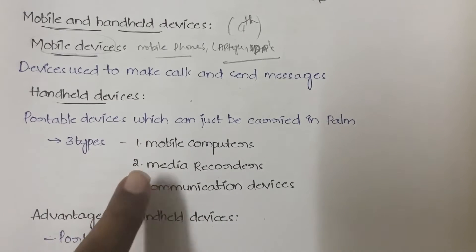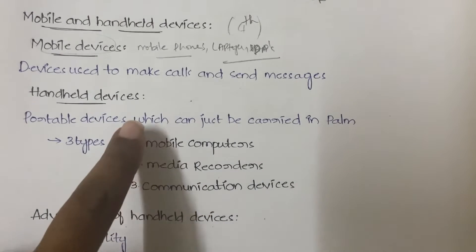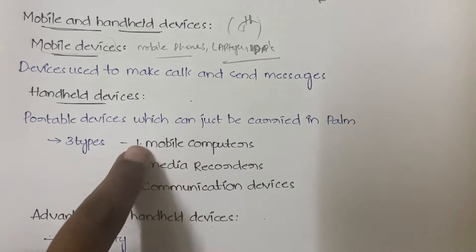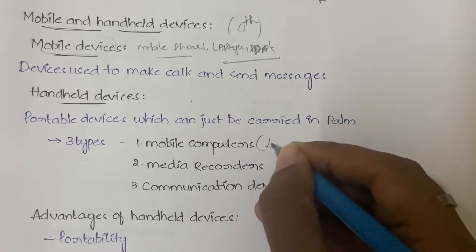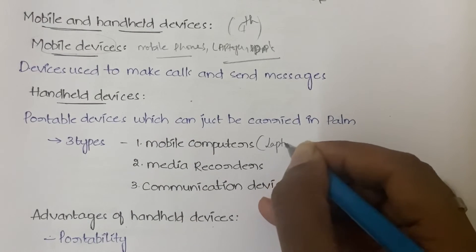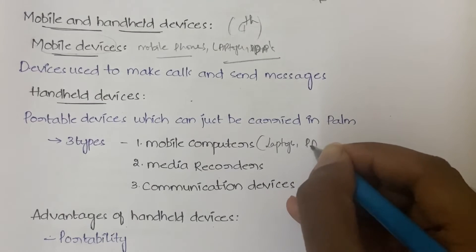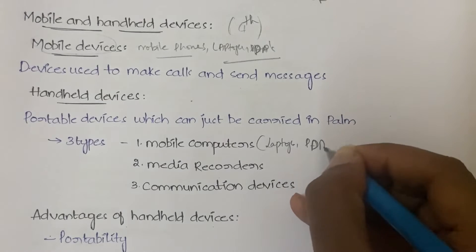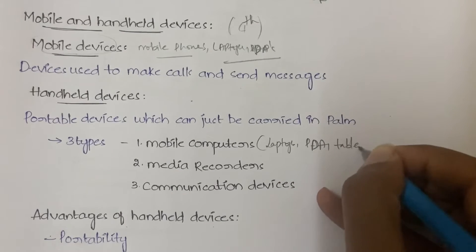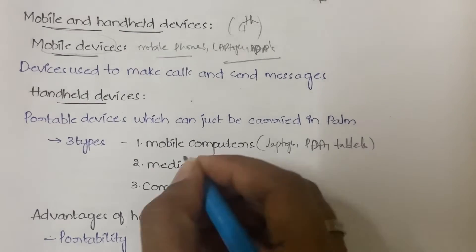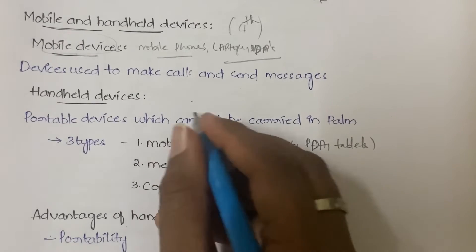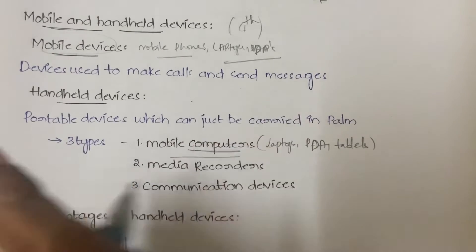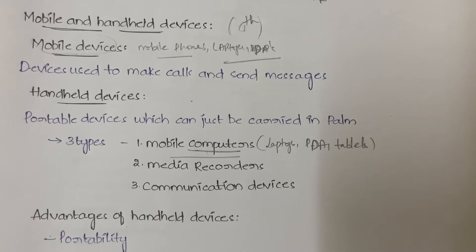The first type is mobile computers — like laptops, PDAs, and tablets. These are computer-like devices which can be moved and taken wherever you go.